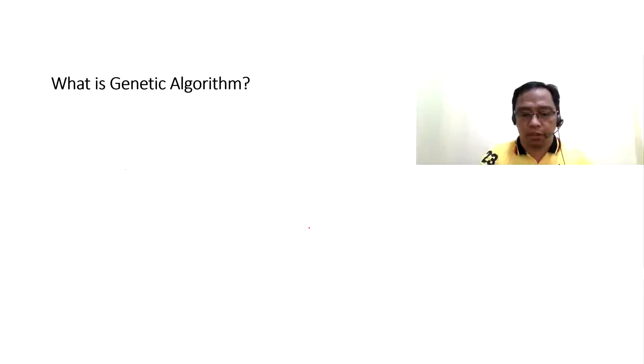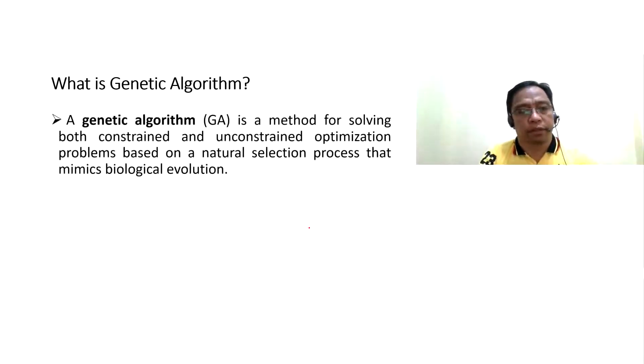What is genetic algorithm? A genetic algorithm is a method of solving both constrained and unconstrained optimization problems based on a natural selection process that mimics biological evolution.